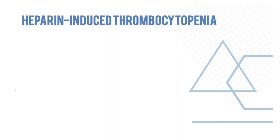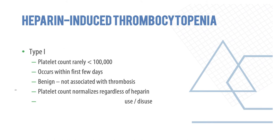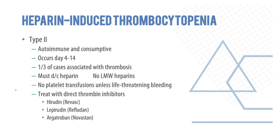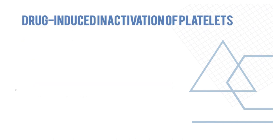Heparin-induced thrombocytopenia (HIT) is of two types. Type 1: seen in many patients, platelet count less than 100,000, happens within the first few days, is benign, not associated with thrombosis, and platelet count normalizes regardless of heparin use. Type 2: autoimmune and consumptive, occurs day 4 to 14, one-third of cases are associated with thrombosis. Must stop heparin; no low molecular weight heparin should be used; no platelet transfusions unless life-threatening bleeding. Treatment is with direct thrombin inhibitors like hirudin, lepirudin, and argatroban.